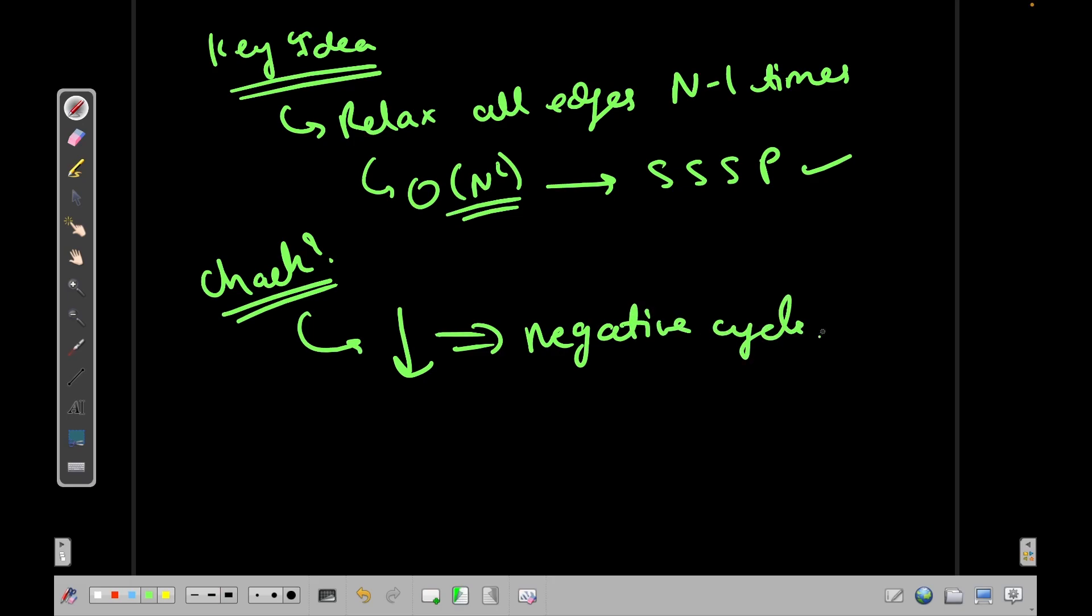In the worst case it will take n-1 times for the distance to decrease and get to the minimum level that it can get. But if you do it once more and the distance still decreases, then that means that you have a negative cycle. Now this is actually very standard and there are a lot of blogs about it. I will go more deeper about this.